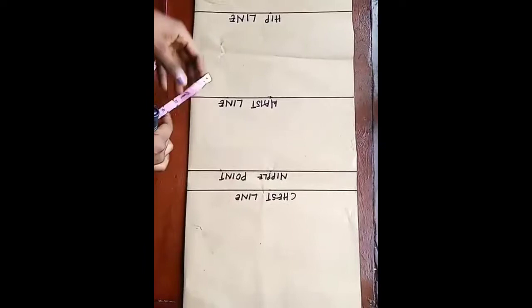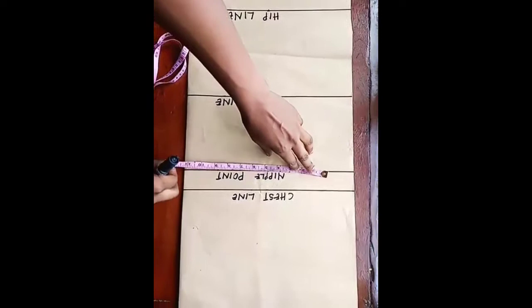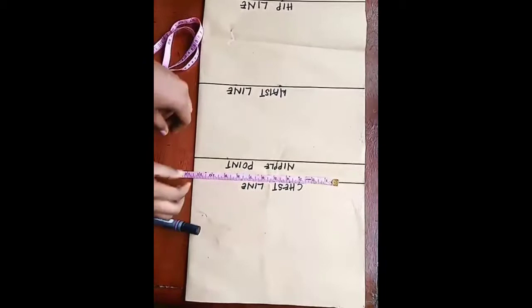So on my chest line, I'll be taking down my bust circumference. So my bust circumference is 36, divided by 4.